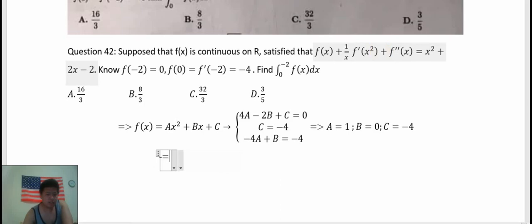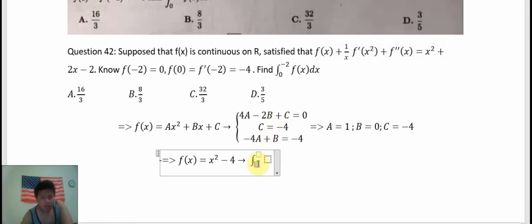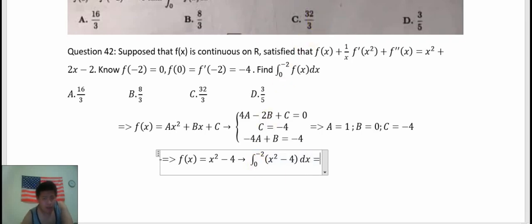So we calculate the integral from -2 to 0 of (x² - 4)dx, and we have the result.